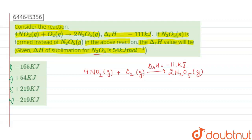And here also given that heat of sublimation of N2O5, which means the N2O5 solid changes into N2O5 gas and heat change for this step is given as 54 kJ per mole.